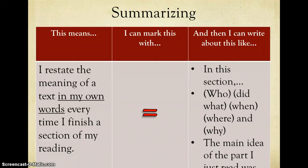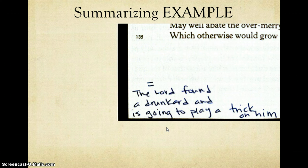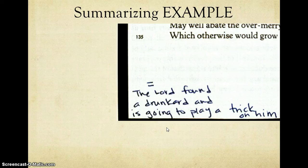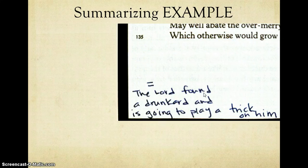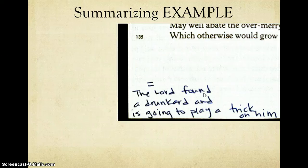Next, we have summarizing, where you restate the meaning of a text in your own words. And usually this is done when you finish a section of your reading. It's indicated through the use of an equal sign, and here are your sentence stems. At the end of the induction scene one, I wrote a summary, because this is a really good place to write one, and I came up with the Lord found a drunkard, Sly, and is going to play a trick on him. Super short and brief, but it gets to the point.